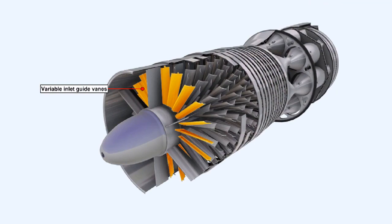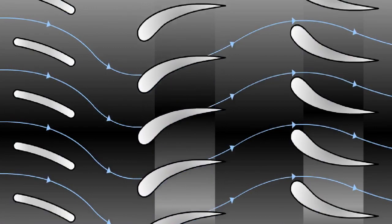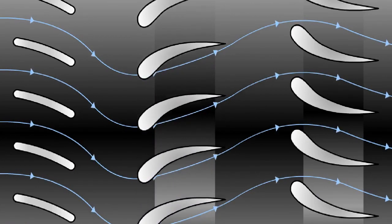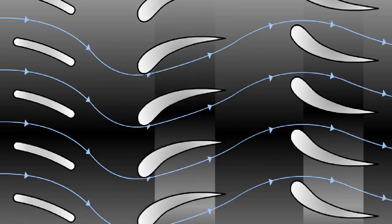Variable inlet guide vanes, or VIGVs, are fitted to engines which have a particular problem with inherent compressor stall at low RPM or during engine acceleration or deceleration. They are fitted just in front of the first rotor stage and can be automatically pivoted around their own axis to vary the path of the airflow going into the compressor, so maintaining the proper relationship between the compressor rotational speed and the velocity of the airflow through the front compressor stages. At low compressor speeds, the VIGVs are angled to impart the greatest amount of swirl to the air, thereby correcting the relative airflow to obtain the optimum angle of attack over the rotor blades.